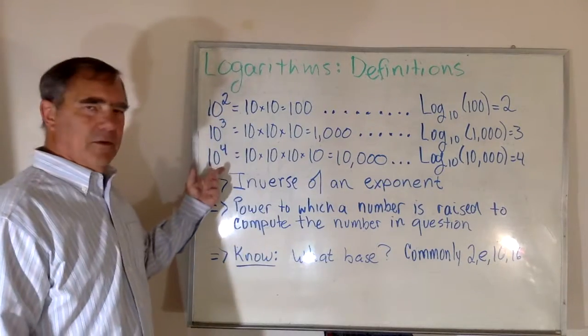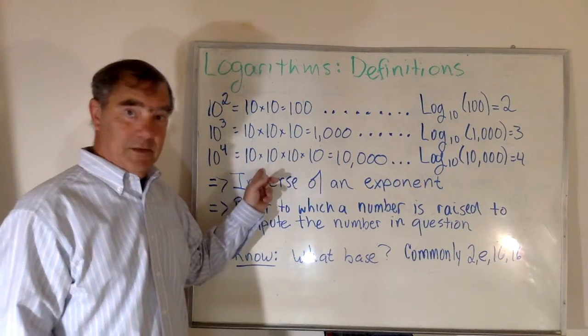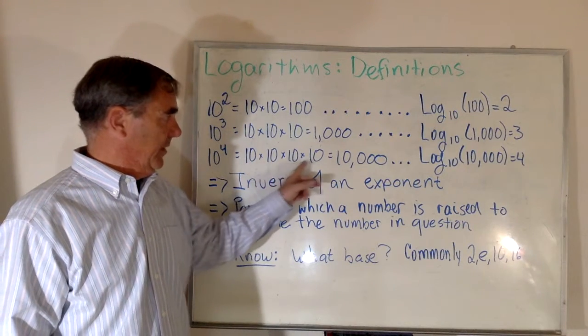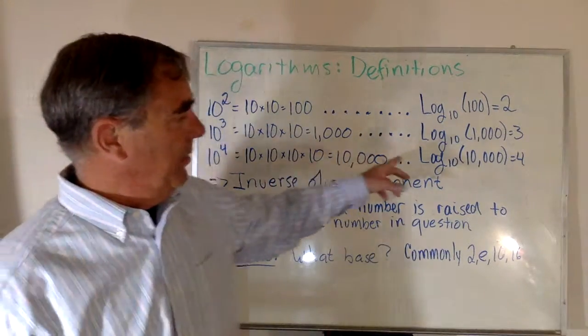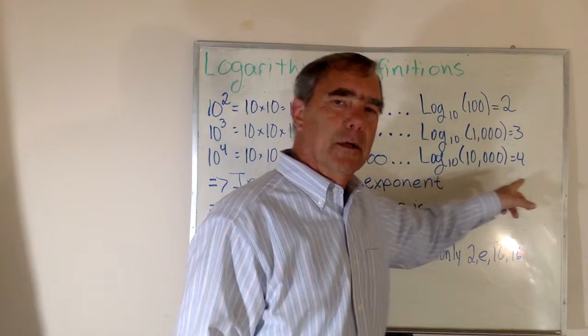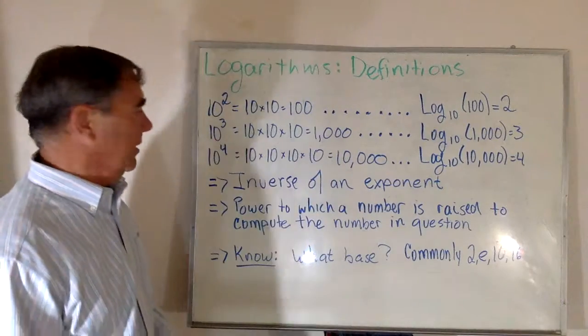And 10 raised to the fourth power is 10,000 which is 10 times itself four times, or 10 times 10 times 10 times 10. And the base 10 logarithm of 10,000 is 4 because 10 to the fourth power is 10,000.